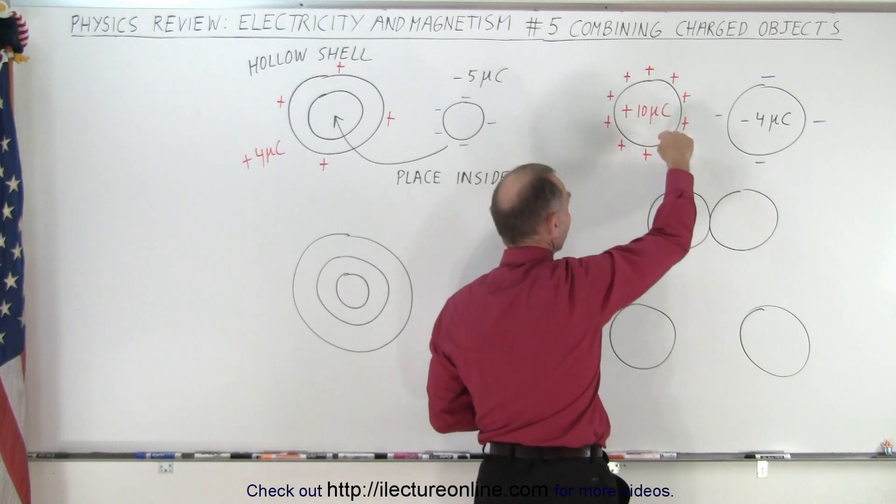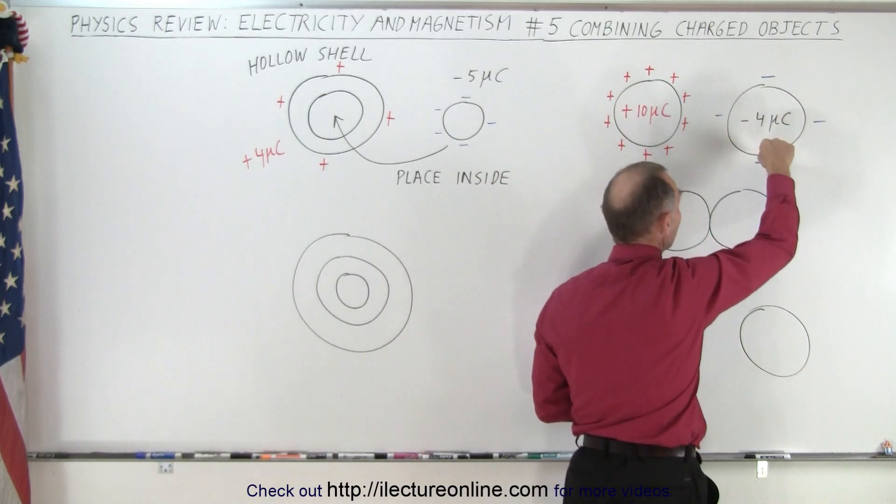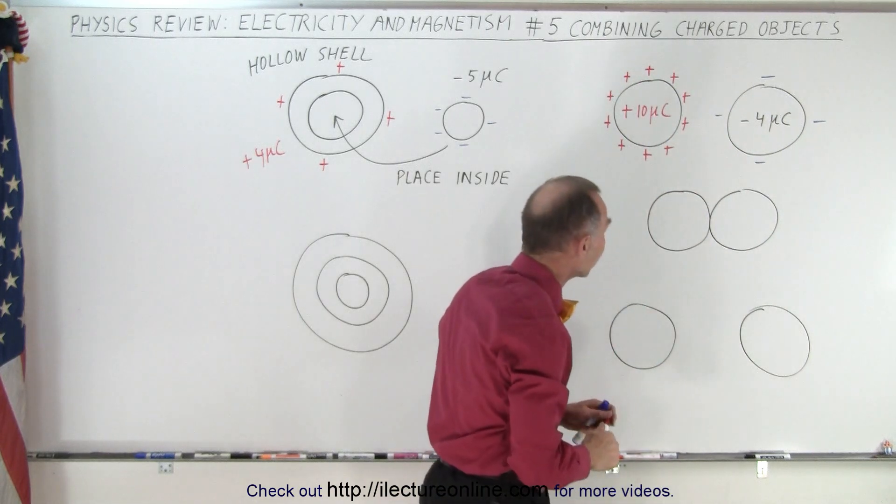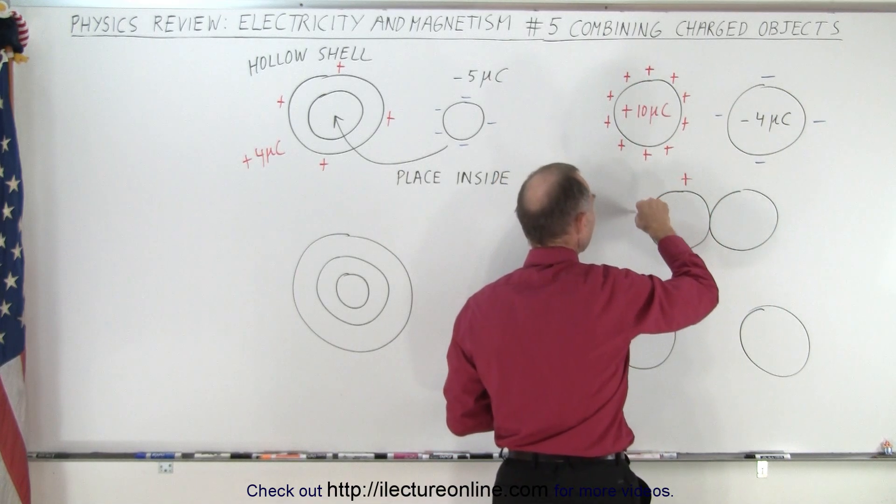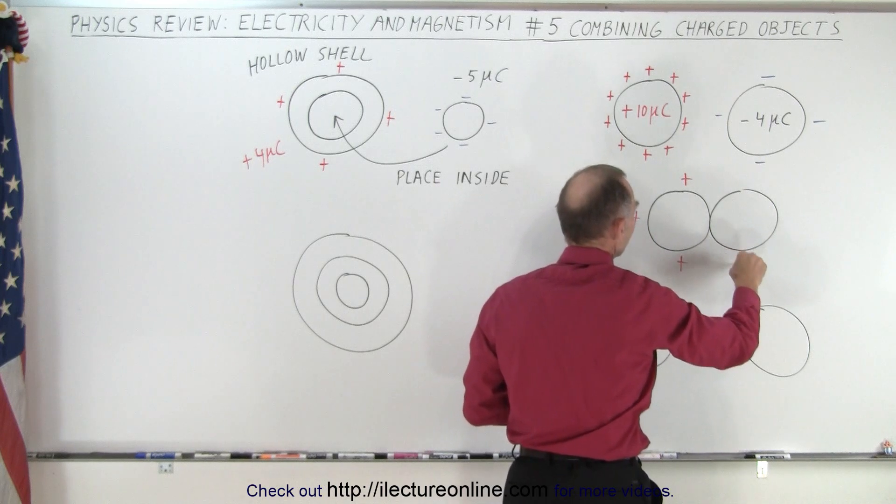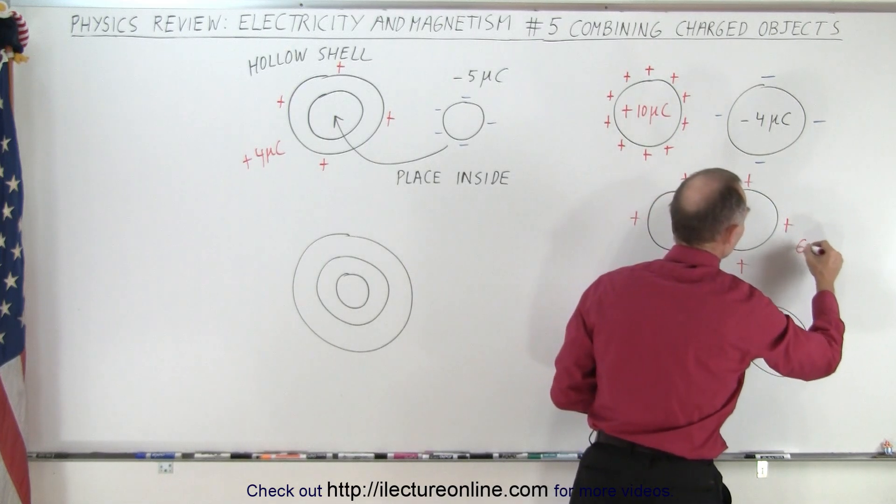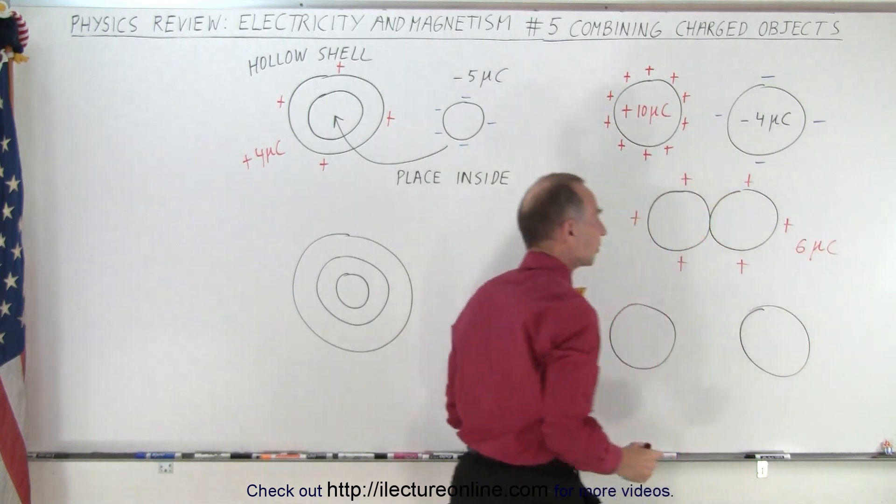So these ten positive charges will cancel out these four negative charges, which will leave you an excess of six positive charges. And they will distribute themselves evenly on the two objects like this. So you end up with three on one and three on the other, for a total of six micro coulombs of positive charge.